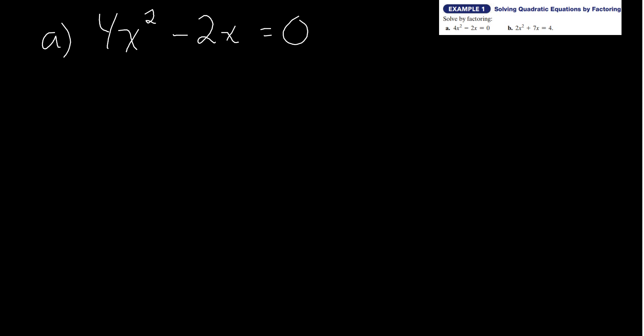Example one: solve by factoring. This is a pretty easy factoring problem. The first thing to do is factor because factoring makes the problem super simple. Looking at part a, we have 4x squared minus 2x equals zero. What do these two terms have in common? It looks like I can pull out a 2 and an x — so factor out 2x.